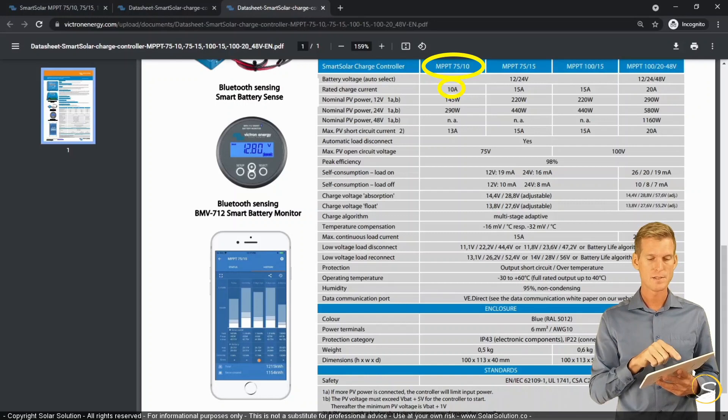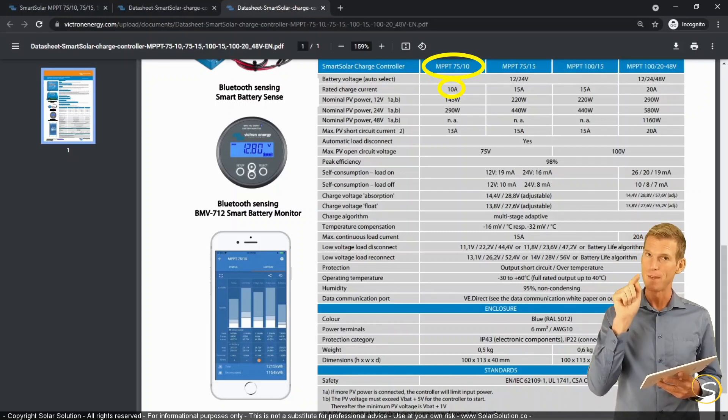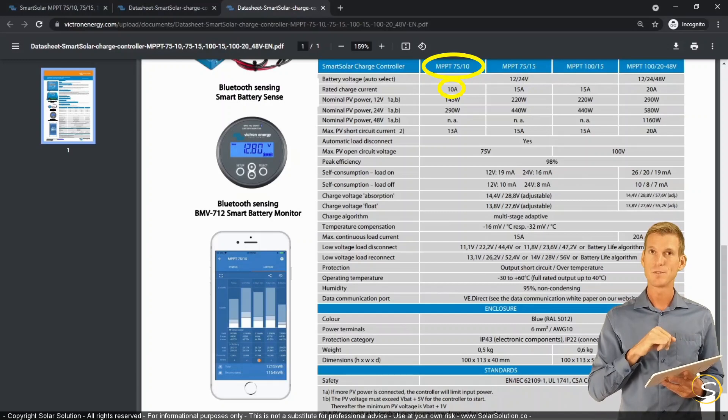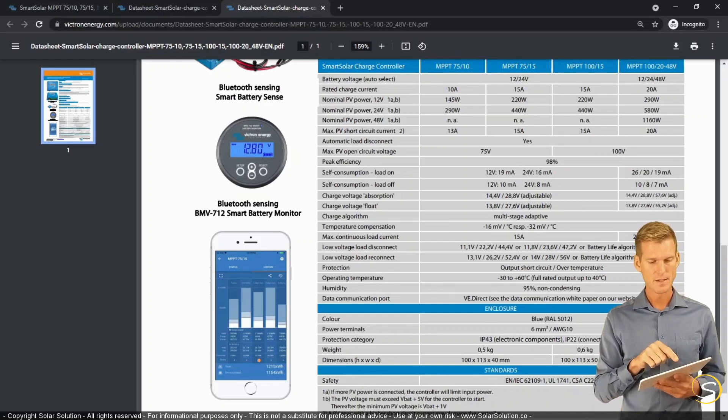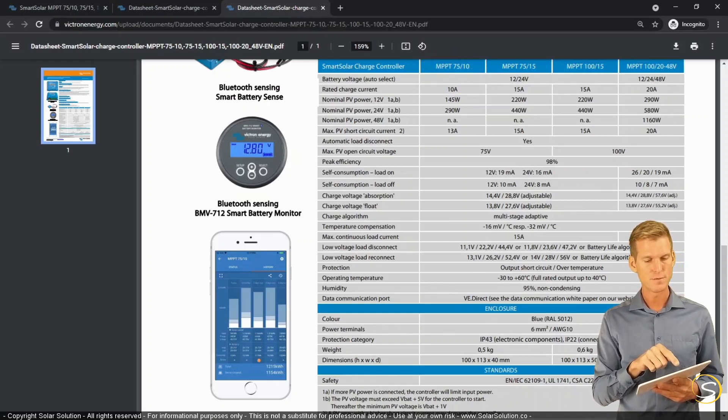if you're powering up an appliance. So this is from the charge controller to the load, not from the solar panel to the charge controller. That's different. So 10 amps is the maximum value for this model to be fed from the charge controller towards the load, towards your battery, etc.